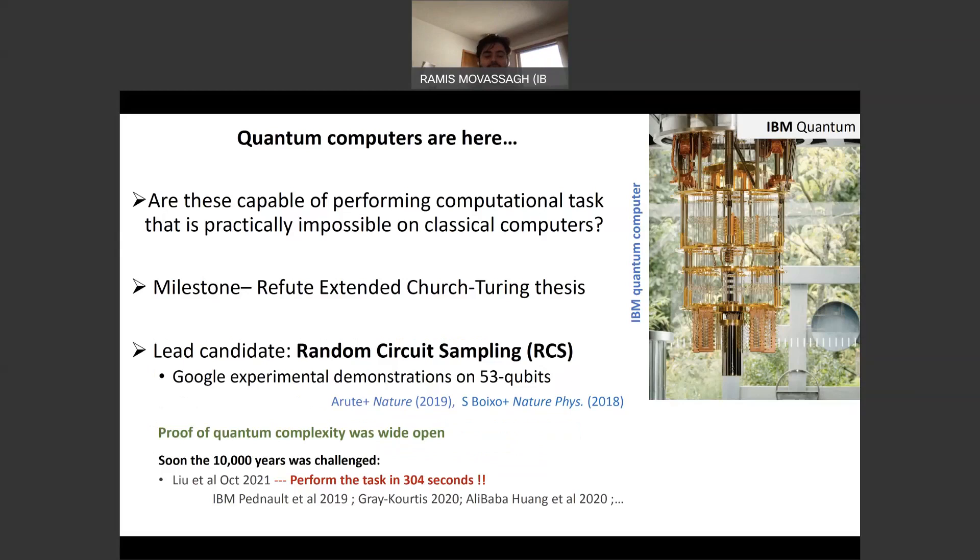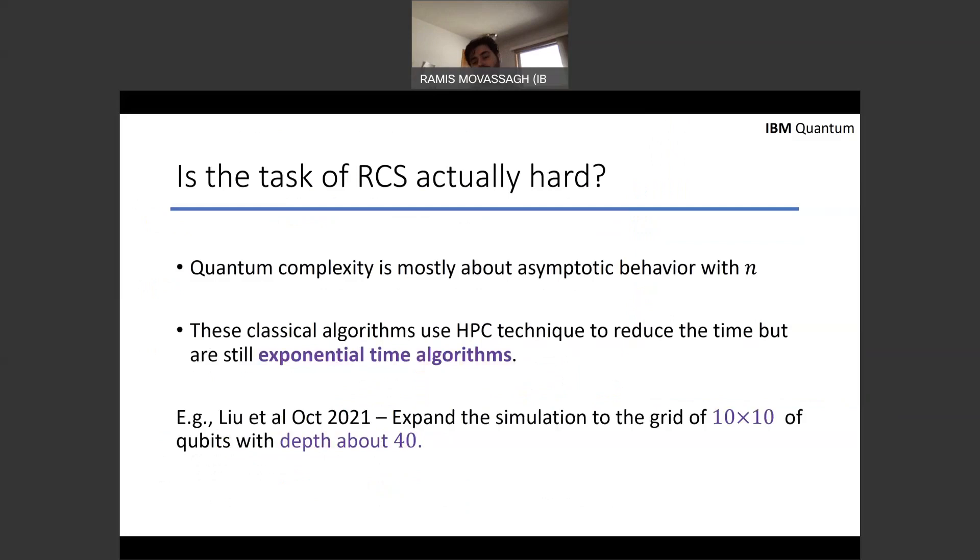And they made a claim that this task would take 10,000 years on any classical computer or supercomputer. However, the task did not have a proof. So we didn't provably know. We believed that random circuit sampling would be hard on a classical computer, but there was not a proof. We still don't quite have it. So soon people started challenging the 10,000 years, and the most up-to-date work can perform what Google did on 53 qubit device in 5 minutes and 4 seconds flat. So this begs the question, is the task of random circuit sampling even hard?